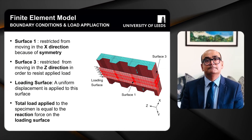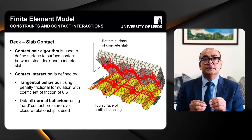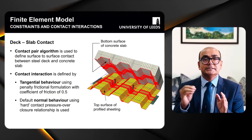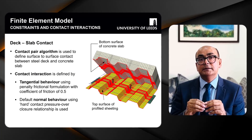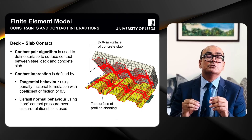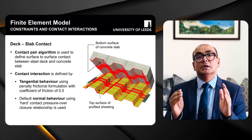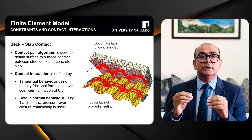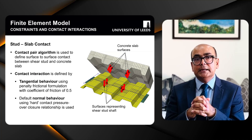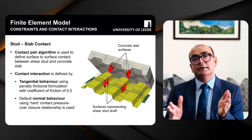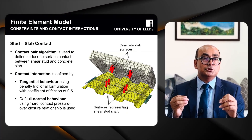For constraints and contact interactions, I used the contact pair algorithm to define contact between the steel deck and slab. Tangential behavior is defined by penalty frictional formulation with a coefficient of friction of 0.5, and default normal behavior is assumed using hard contact pressure-overclosure in Abaqus. For contact between the stud and slab, I used a similar approach: contact pair algorithm with friction of 0.5 and default normal behavior.